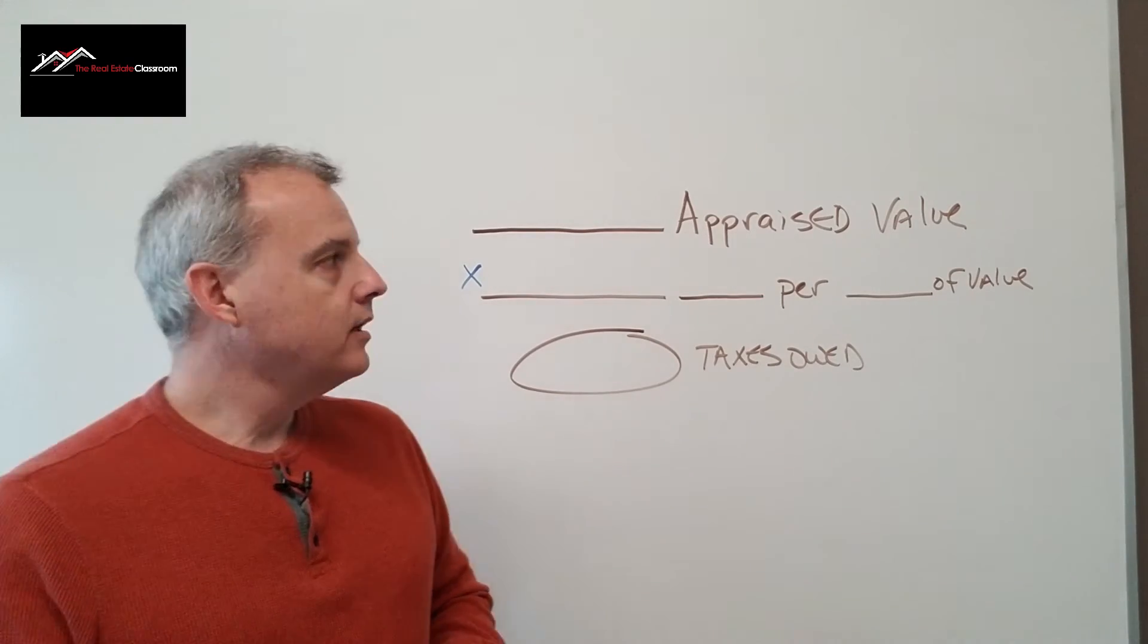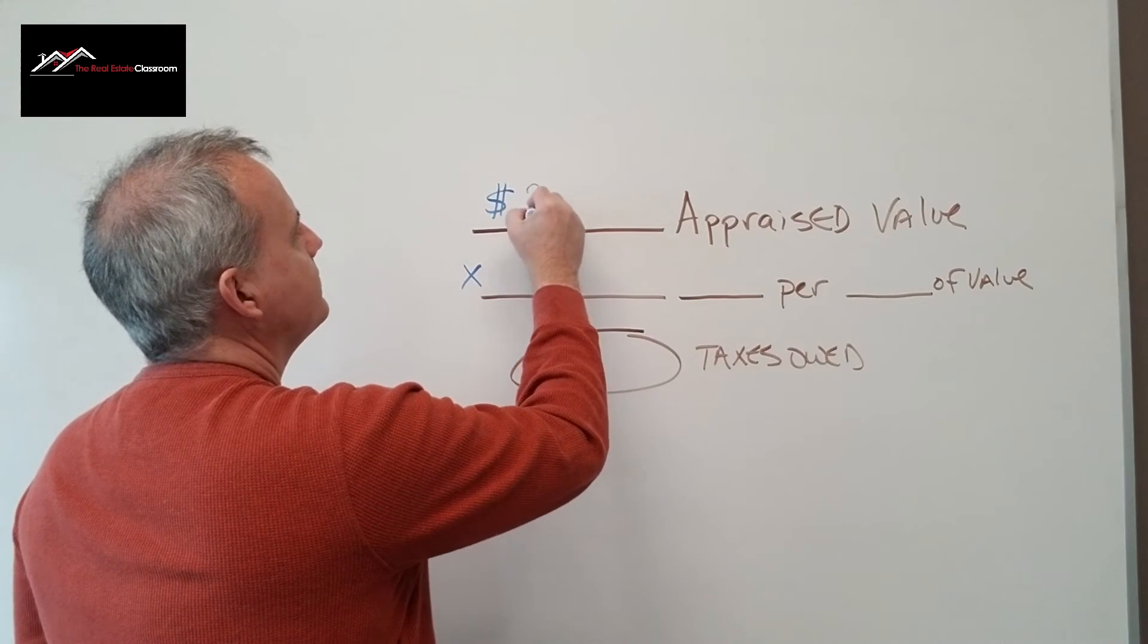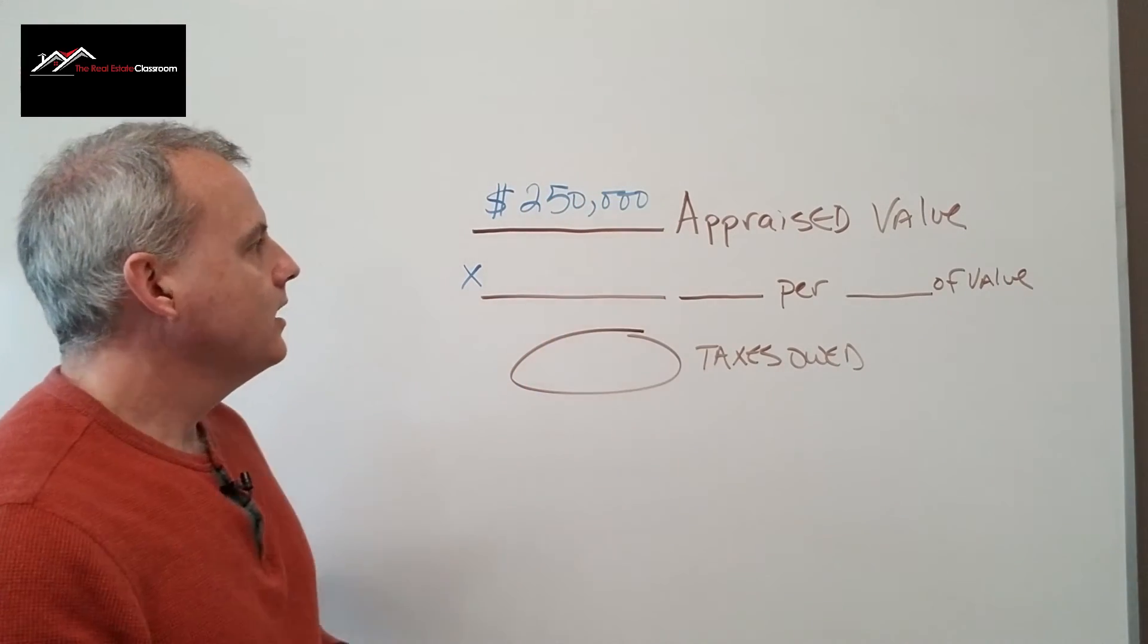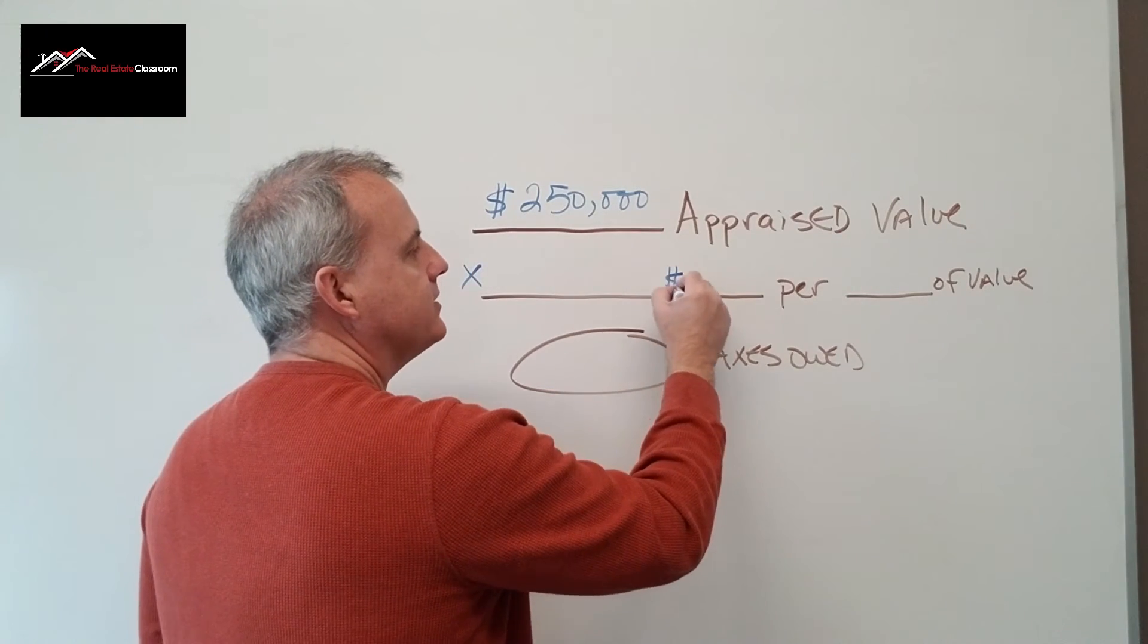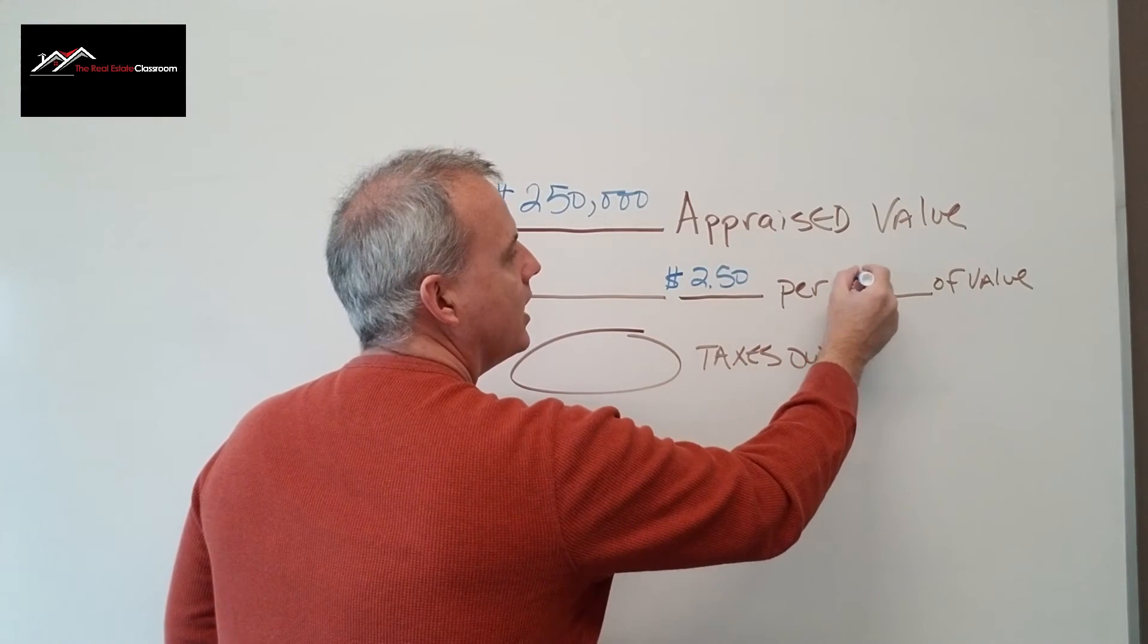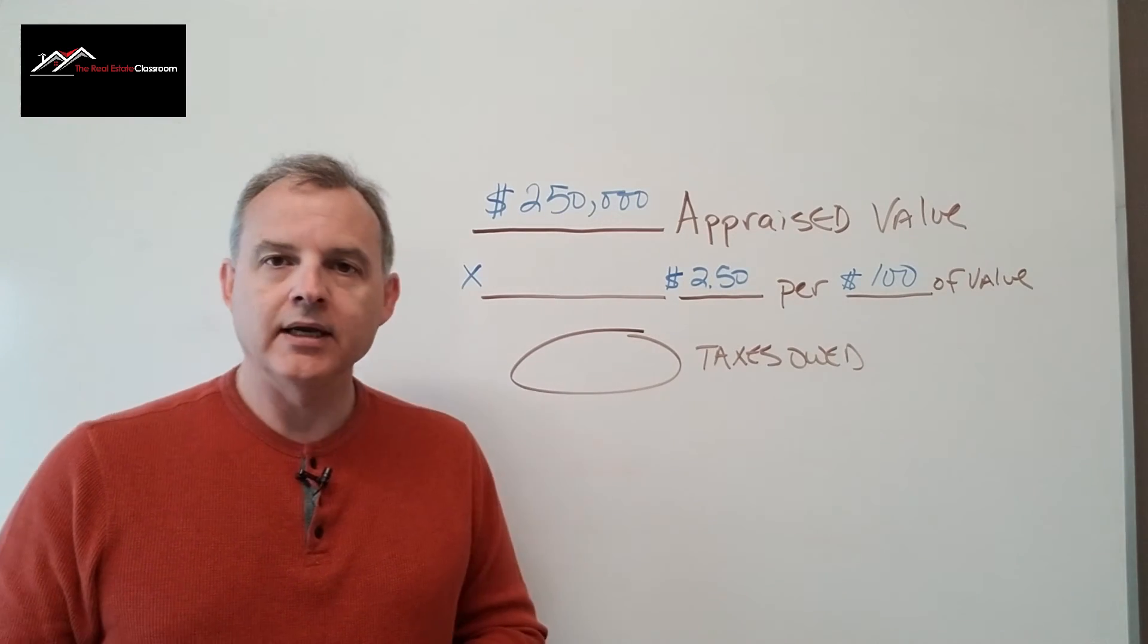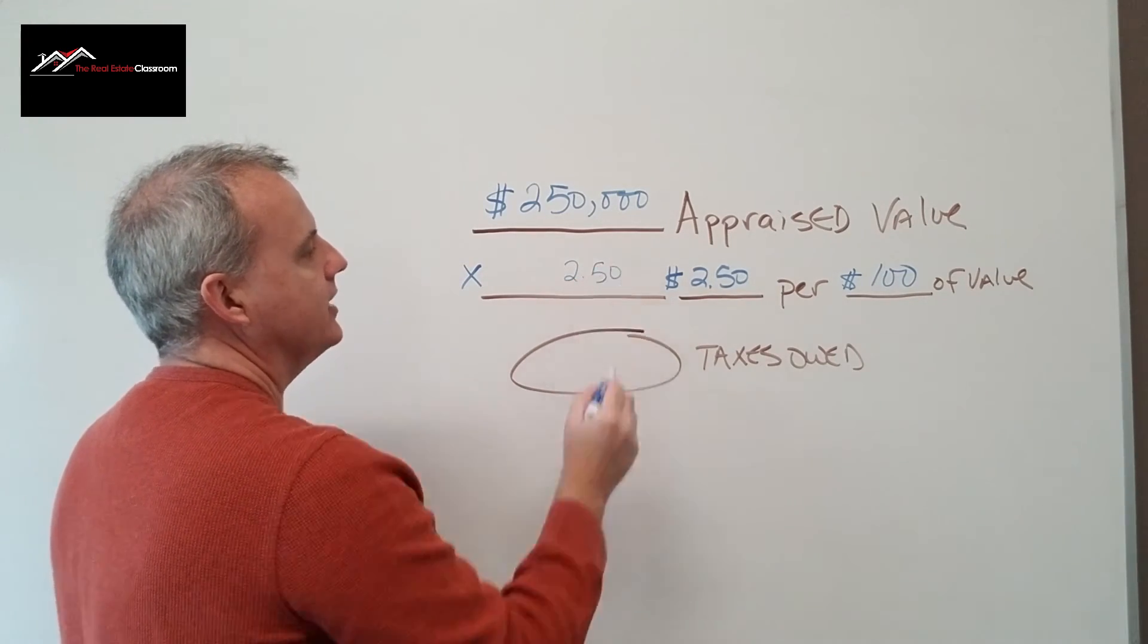In our example here, our property has an appraised value of $250,000, and we're going to multiply that by $2.50 per $100 of value. What I like to do is just put in $2.50 right here.